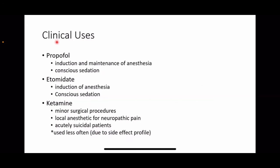Now let us see about the clinical uses of intravenous anesthetic agents. Propofol is useful in induction and maintenance of anesthesia, and also for conscious sedation. Etomidate is useful for induction of anesthesia and conscious sedation. Ketamine is used less often due to its side effect profile. It can be used for minor surgical procedures, as a local anesthetic for neuropathic pain, and may also be useful in acutely suicidal patients.